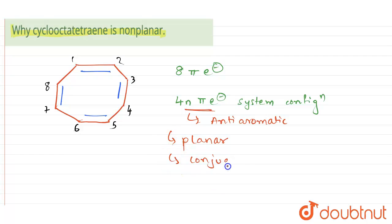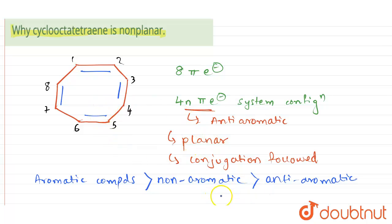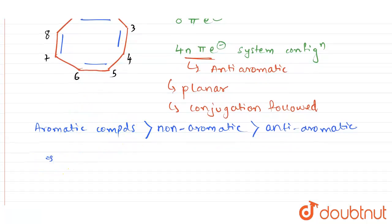We know that the energy of aromatic compounds is quite high, then comes non-aromatic, and finally anti-aromatic compounds have the lowest stability. Larger structures change their planarity from planar to non-planar to become non-aromatic, because anti-aromatic compounds are unstable. So cyclooctatetraene changes to a tub-like structure, which is a non-planar molecule.